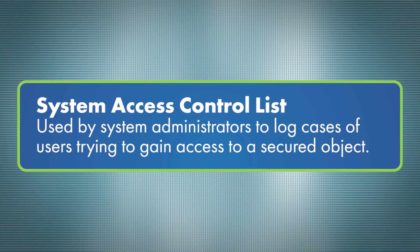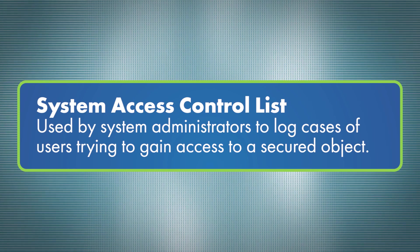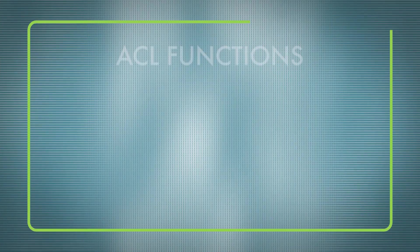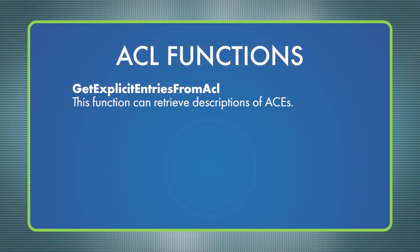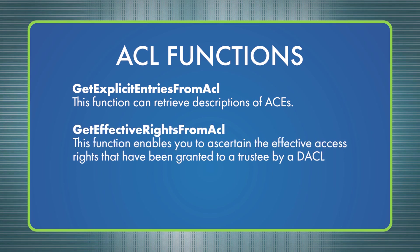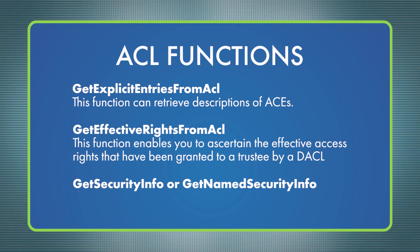If a DACL of an object doesn't have any ACEs, access rights are denied to all users. A System Access Control List, or SACL, can be used by system administrators to log cases of users trying to gain access to a secured object. You can retrieve access control data from an ACL with these functions: GetExplicitEntriesFromAcl retrieves descriptions of ACEs; GetEffectiveRightsFromAcl ascertains the effective access rights granted to a trustee by a DACL; and GetSecurityInfo or GetNamedSecurityInfo points you to an object's DACL.